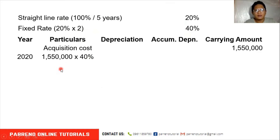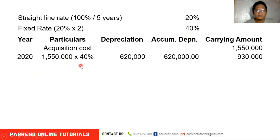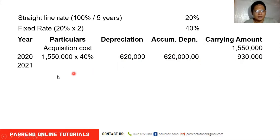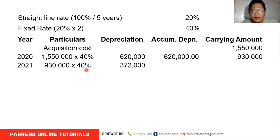In 2020, our depreciation base is $1,550,000 — the cost — times the double declining rate of 40%. So you will have a depreciation of $620,000. Since it's the first year, the accumulated depreciation equals the depreciation expense for the year. Our new carrying amount is $930,000, which is $1,550,000 less $620,000.